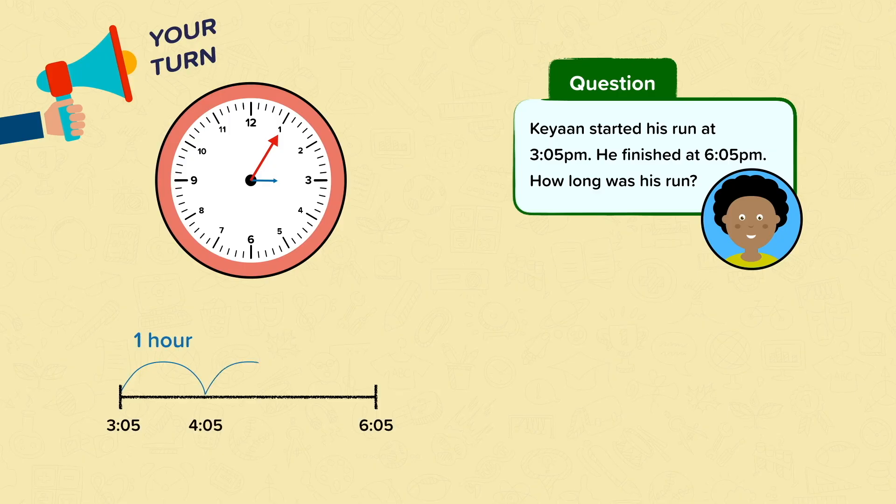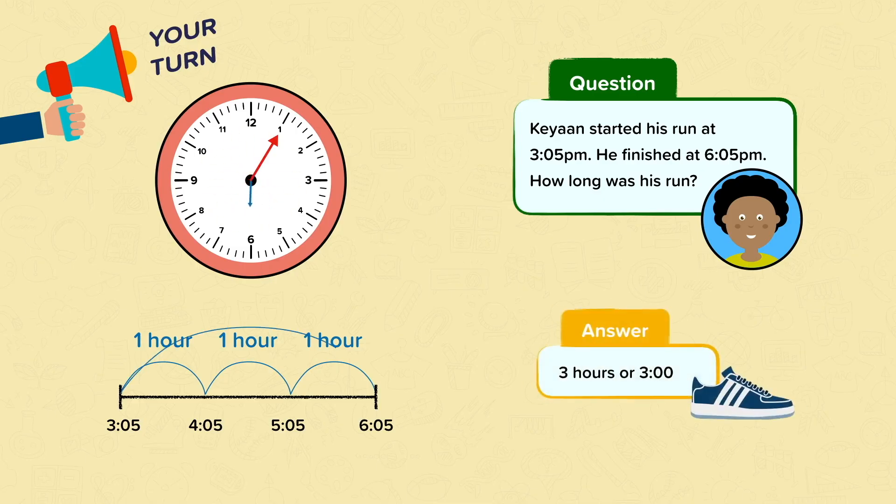Now it's your turn. One hour to 5:05 and one last hour to our end time 6:05. So we know the duration of his run was 3 hours.